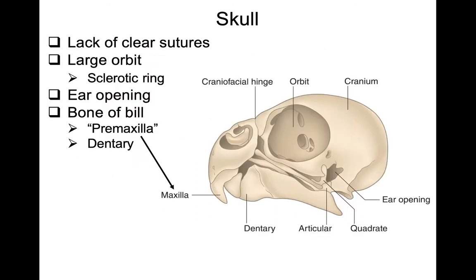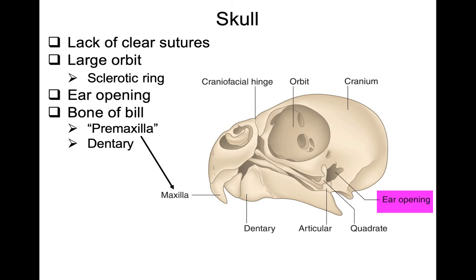There is a lack of clear sutures in the skull, with a lot of fusion of the individual skull bones. Birds have a really large orbit, associated with most of them having a really large eye. To support this large eye, internally they have a ring structure called the sclerotic ring, something they also share with non-avian reptiles. Birds don't have an external ear, but they do have an ear opening in the skull that leads to the middle ear and inner ear.